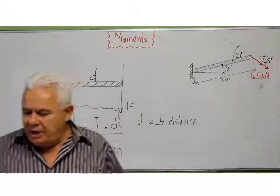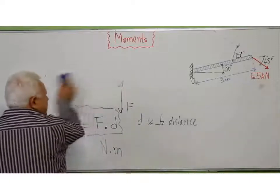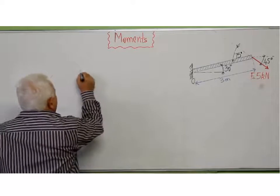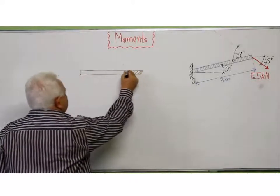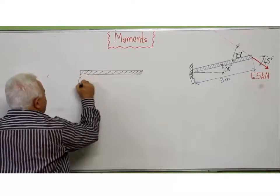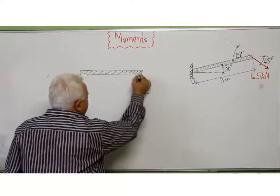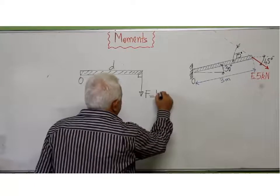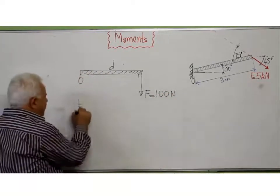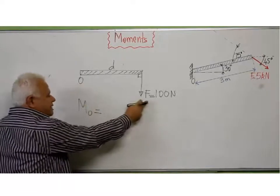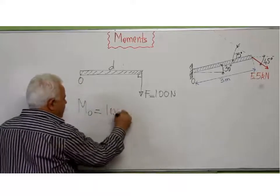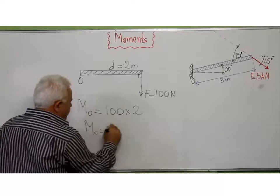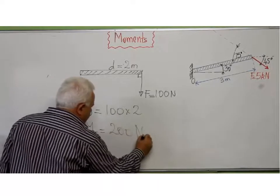Now I will give three simple examples on how to calculate a moment. In this first example, I've got a bar with my point O here, and the force F is perpendicular to the bar. F equals 100 newtons. If I am asked to calculate the moment about O of this force F, I take 100 and multiply it by the distance — suppose the distance is 2 meters — so M_O is 200 newton-meters.